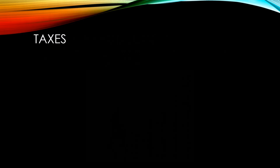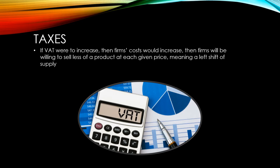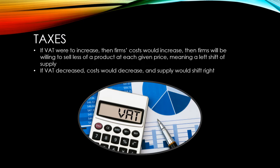If VAT were to increase, then firms' costs would increase because there's VAT on some of the things that firms consume in operating their businesses. This effectively means an increase in the firm's costs, meaning they'll be less willing to sell a product at each given price in a given time period, meaning a left shift of supply. If VAT were to decrease, then costs would decrease and supply would shift to the right.